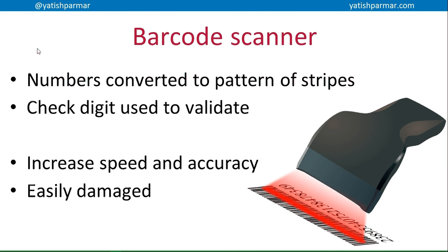Barcode scanners are a second method. Here we have numbers converted to a pattern of stripes. You can get barcodes in a variety of different forms — there are even radial barcodes. A check digit is used to validate that the number has been read correctly, and barcodes increase the speed and accuracy of data entry dramatically. Sainsbury's was the first supermarket in the UK to introduce barcode scanning at checkouts in the 1980s, and it had a huge impact on their business. The downside of barcodes is that they are easily damaged.